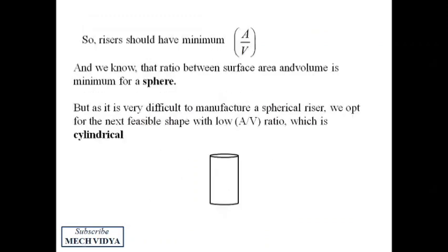Now for a given volume, the surface area, we know that it is minimum for a sphere. But since it is not possible to make a spherical riser, so the next feasible design is the cylinder. So we usually go for the cylindrical design, cylindrical shape while designing the actual risers.